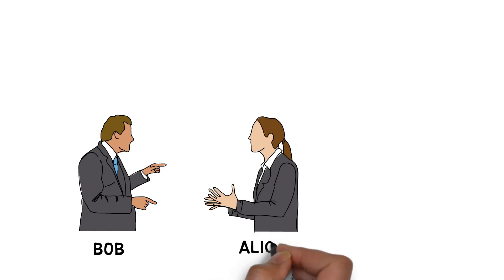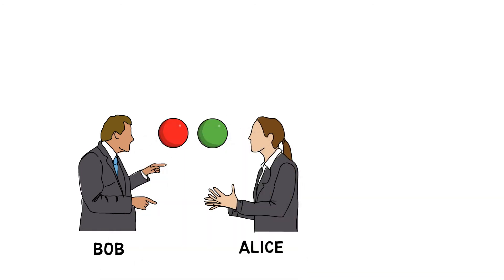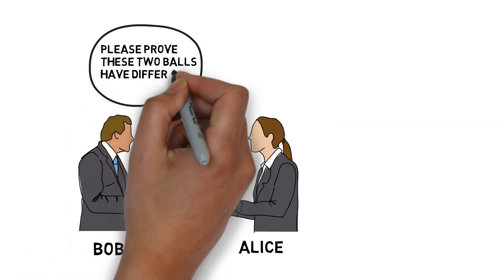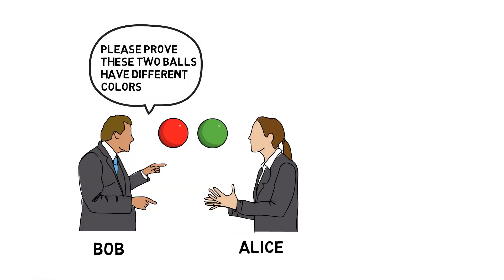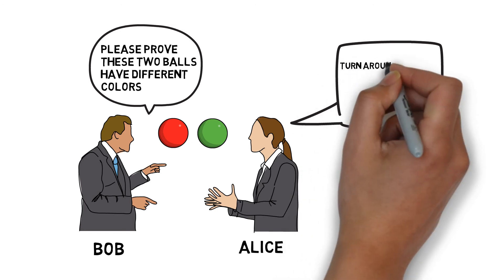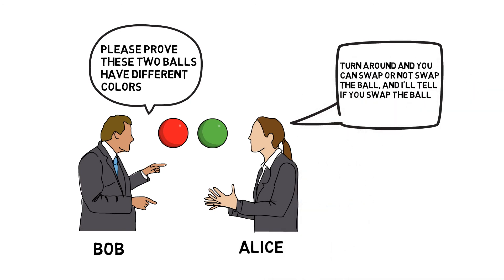Let's take a look at another example. Alice has two balls which are red and green. Her friend Bob has color blindness and cannot identify colors. How can Alice prove to Bob that the two balls have different colors? One solution is that Bob puts the two balls in his hands, and in each round he can randomly choose to swap or not swap the balls in his hands without letting Alice see the swap action.